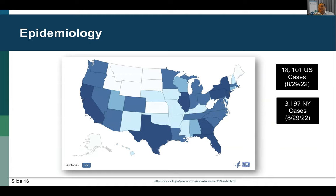The United States is at the center of this outbreak, with over 18,000 cases as of last night, remaining number one in the world. On August 4th, the United States declared human monkeypox virus a public health emergency, freeing up needed resources. Within the United States, New York City is now number two with almost 3,200 cases. As a sexual health practitioner in New York City, it's been my privilege to care for many of these patients and share what I've learned with everyone today.